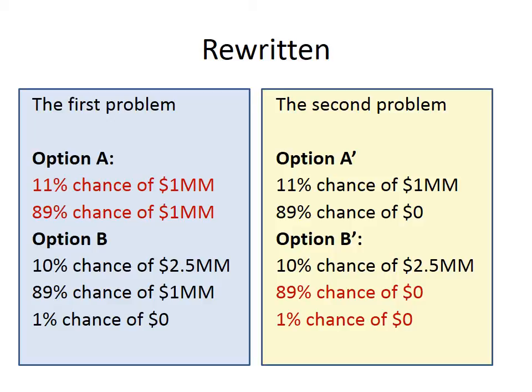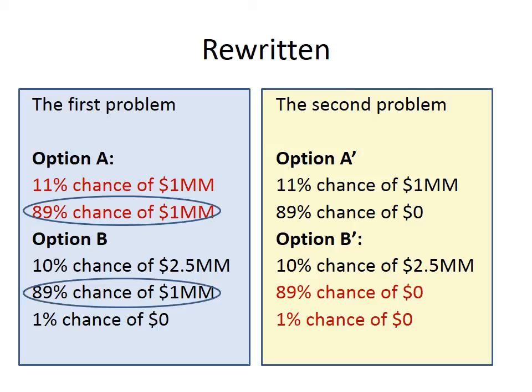Likewise, on the right-hand side, the 90% chance of getting nothing is broken down into an 89% chance of nothing and a 1% chance of nothing — again functionally equivalent, just broken into two separate lines for the sake of clarity.